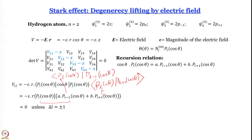So V_ij = 0 unless ΔL = ±1. Only when j = i+1 or j = i−1 (i.e., the angular momentum quantum numbers differ by one) will one of the integrals survive and give a nonzero result.